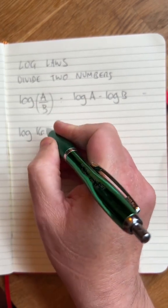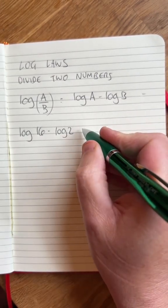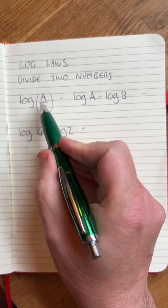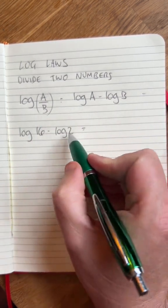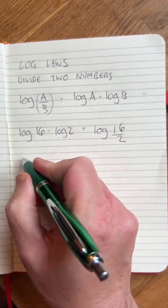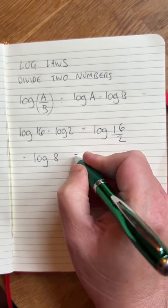So if I had log base 10 of 16 minus log 2, if I want to write that as a single log number, that's the same as A divided by B. Here's A, there's B. I'm going to do log 16 divided by 2, which gives me log 8.